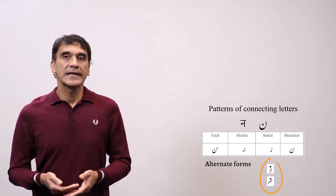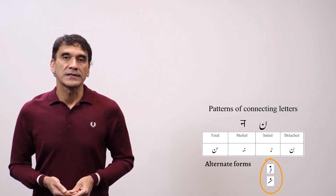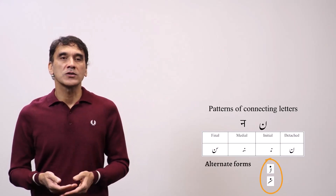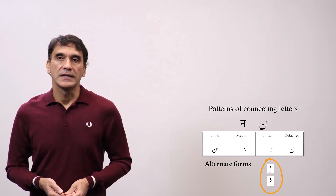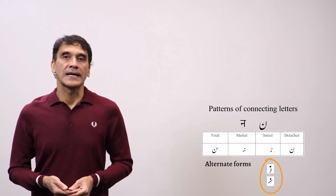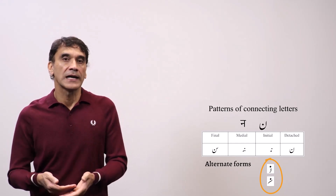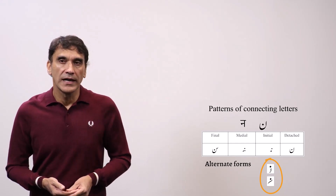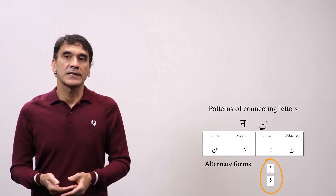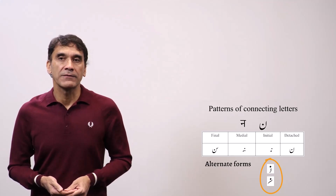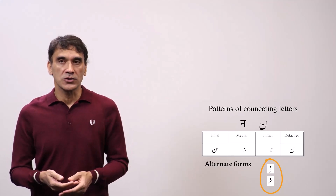Just like the bay group letters, noon also has alternate forms. The first one is a little higher shosha — a little higher stroke — and the second one is the slanted line with nookta on top.